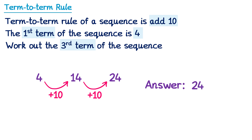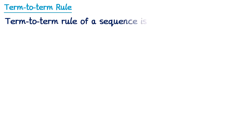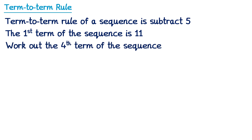Let's try a second example. So in this one the term-to-term rule is slightly different, it's subtract 5. We're told the first term of the sequence is 11, and we need to work out the fourth term this time. So we're told the first term again, this time it's 11, so let's write that down as the start of the sequence.